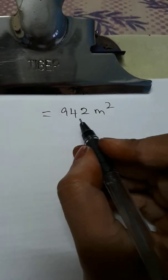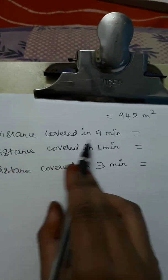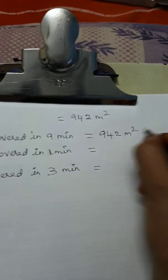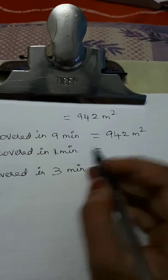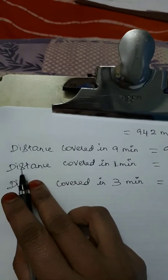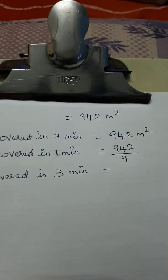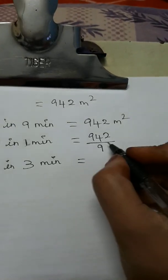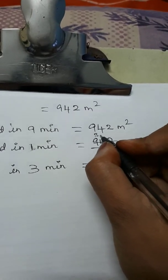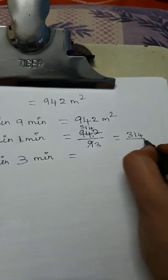The full track distance is 942 meters, covered in 9 minutes. To find the distance in 1 minute: 942 ÷ 9. Cancelling using the 3 table: 942/9 = 314/3. So in 1 minute the distance is 314/3 meters.